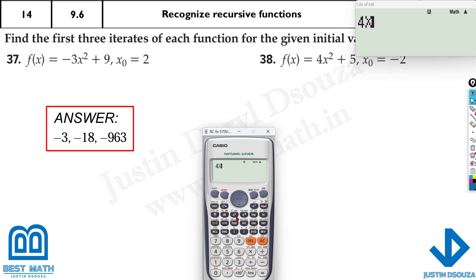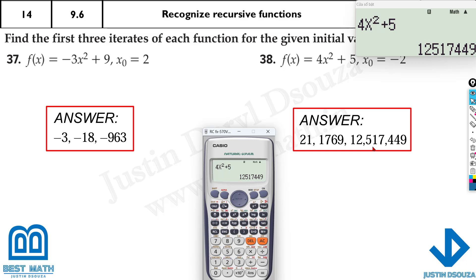And 4x squared plus 5, starting with minus 2 here. 21, calculate it again at 21, and that's 1769, and lastly 1769, here we go, that's a huge answer, so it's 12,517,449, so those are the answers.